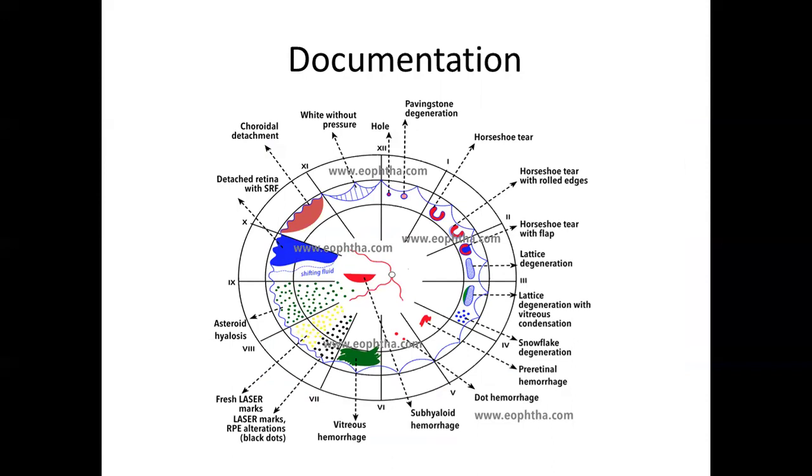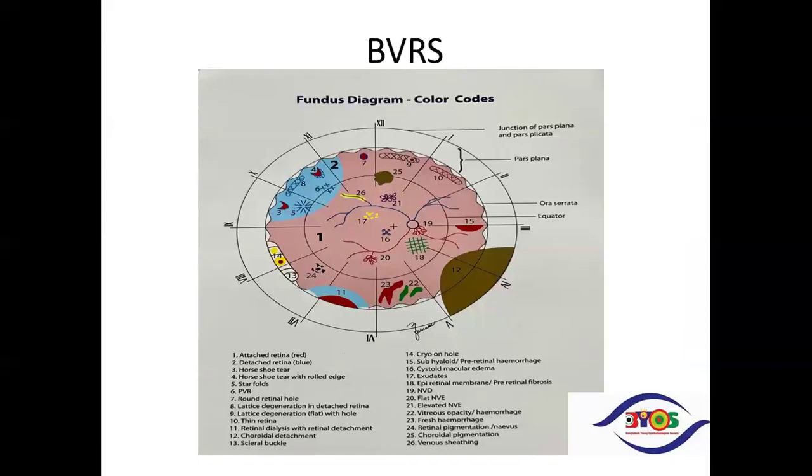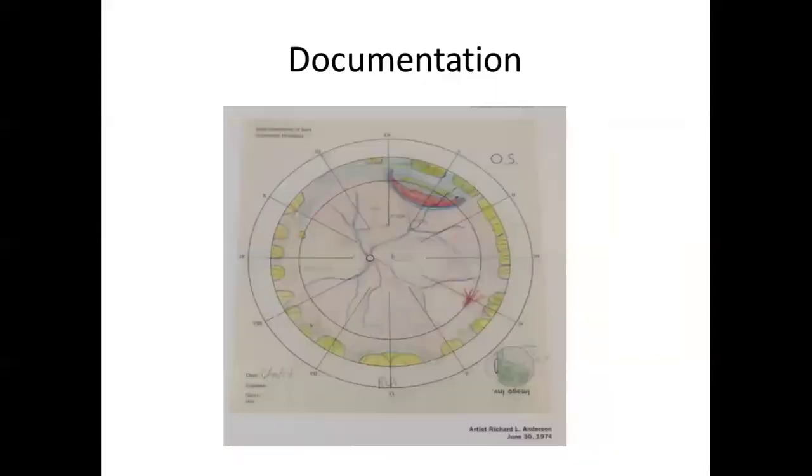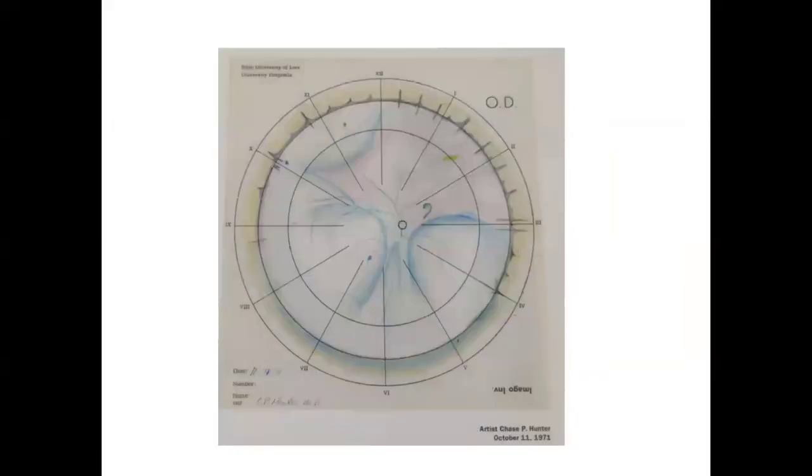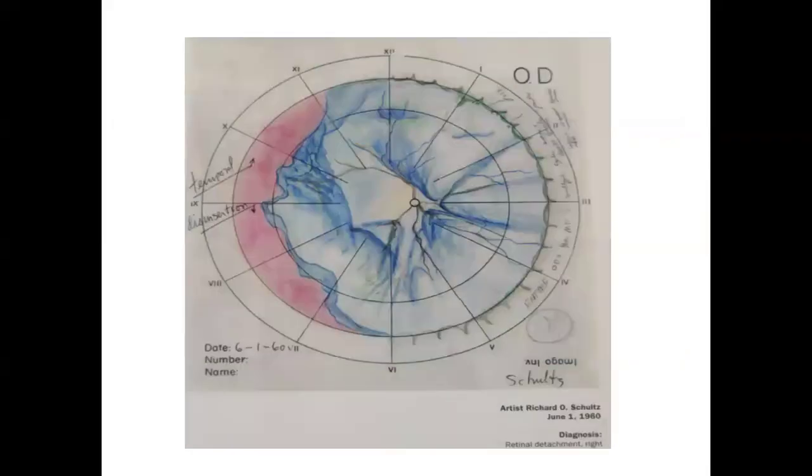Different charts are available. In Bangladesh we have this chart developed by the Bangladesh Vitreo Retina Society. Let me show you some pictures. This one is a superior temporal tear drawn in 1974. The next one is a bullous RD drawn in 1971. This one is temporal disinsertion - you can see here the retina is temporally disinserted and the bullous retinal detachment is evident.